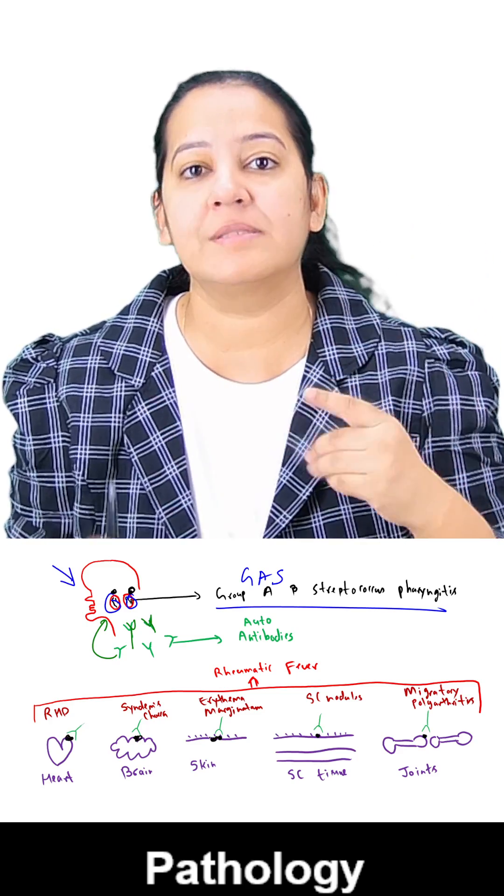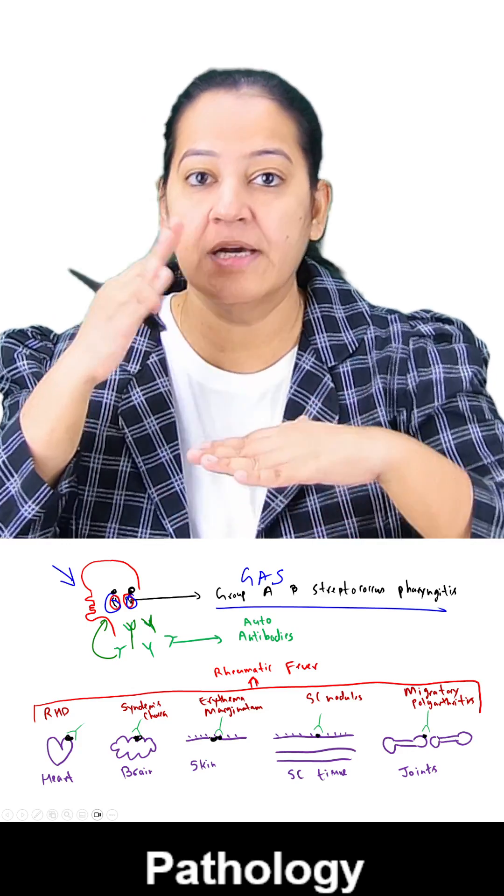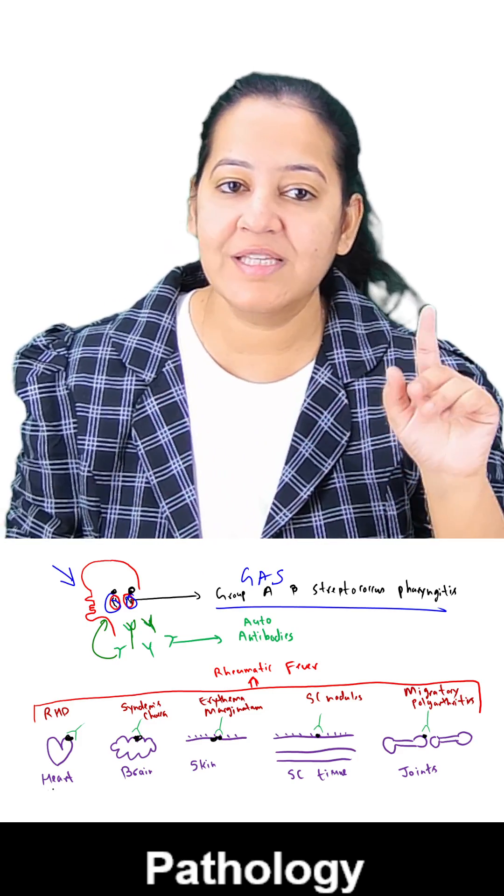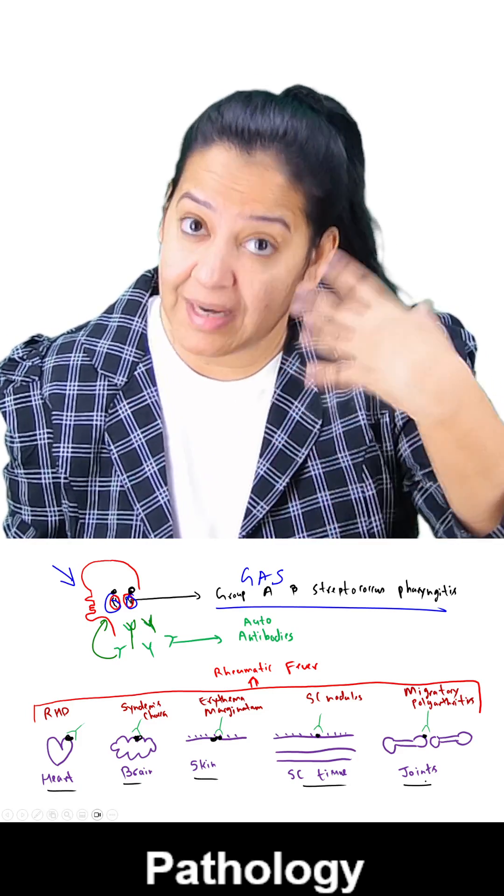What are the human five organs? The two vital brain, heart, skin. Below the skin, it's subcutaneous tissue and below that joints. So these are the five organs on which the similar antigen is present.